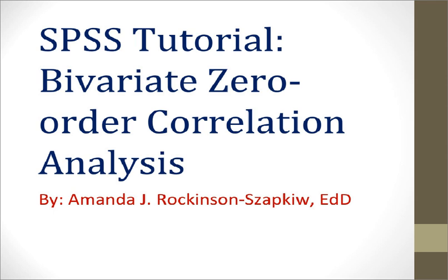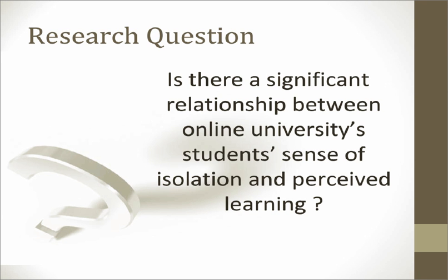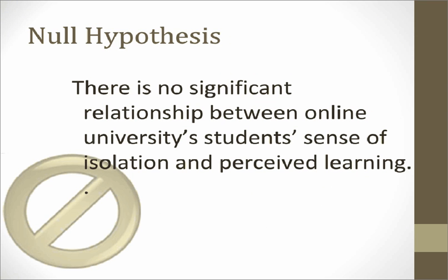Welcome to the SPSS tutorial for bivariate correlation. This is Dr. Zabkew, and in this tutorial you will learn how to conduct a bivariate correlation using SPSS, and then use the SPSS output to write an APA results section. The research question we will be considering is: is there a significant relationship between online university students' sense of isolation and perceived learning? The null hypothesis is: there is no significant relationship between online university students' sense of isolation and perceived learning.